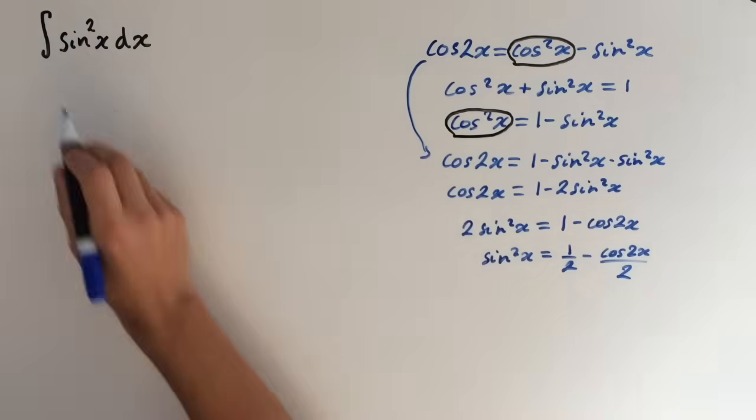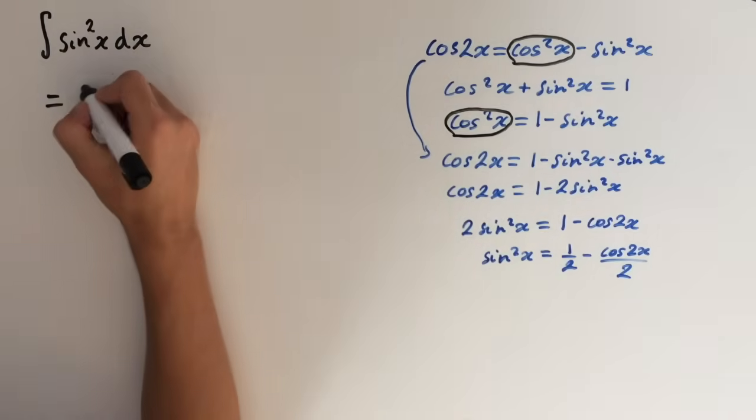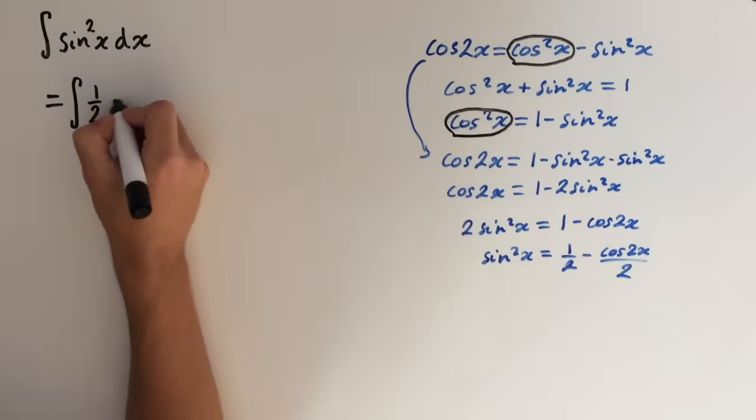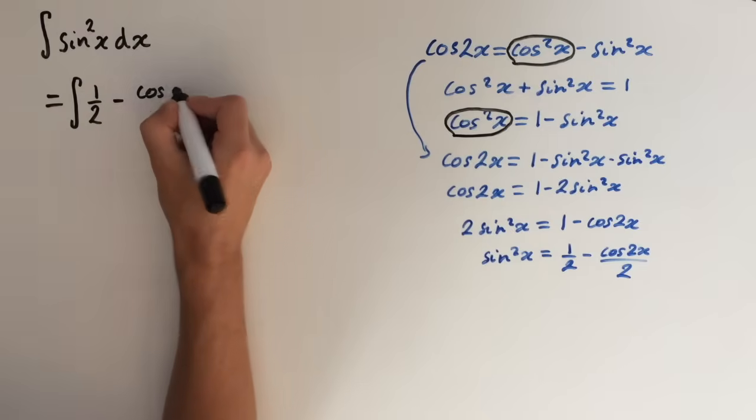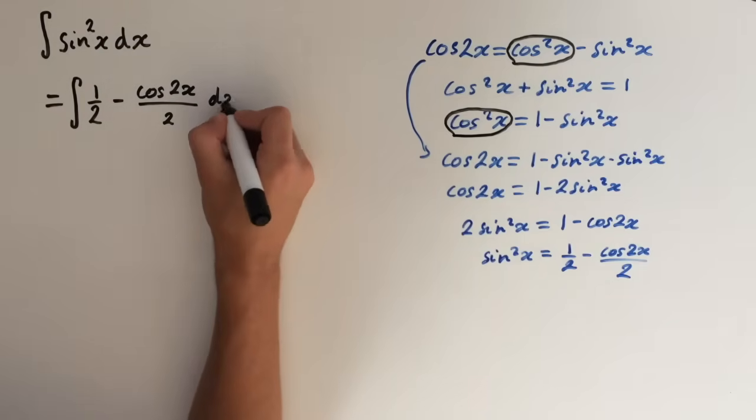And we can integrate this. So we're just going to substitute it in here. So this equals the integral of 1 half minus cos 2x over 2 dx.